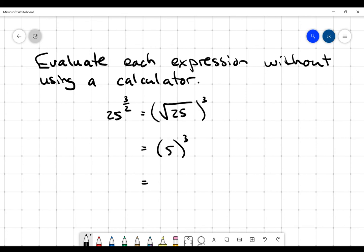And actually, that's relatively easy, too. I know that 5 squared is 25, multiplied by another 5 is 125. And so I know that 25 to the 3 halves is equal to 125.